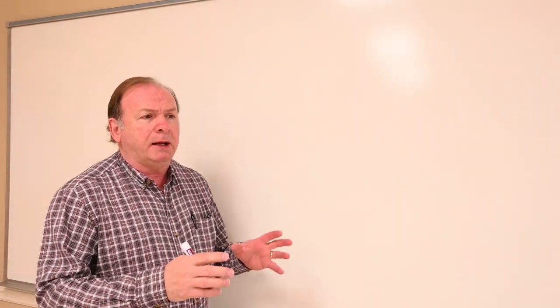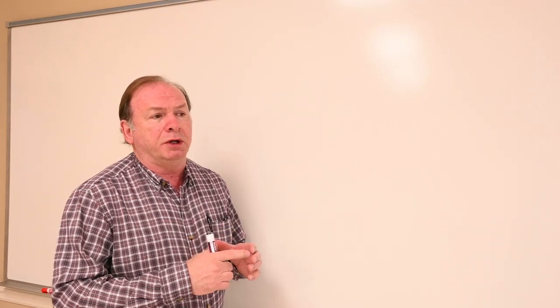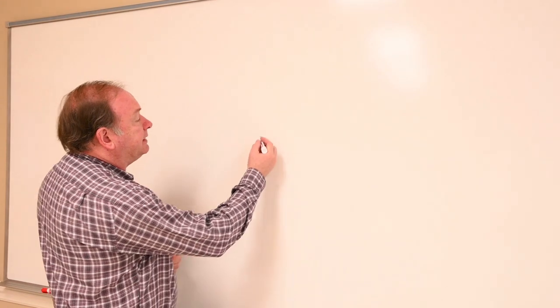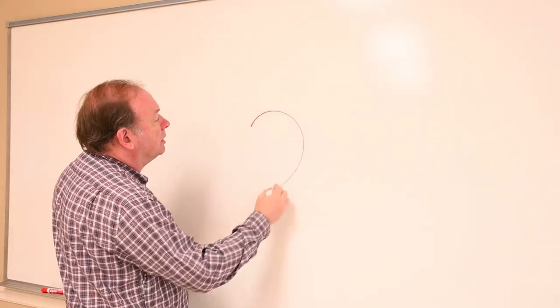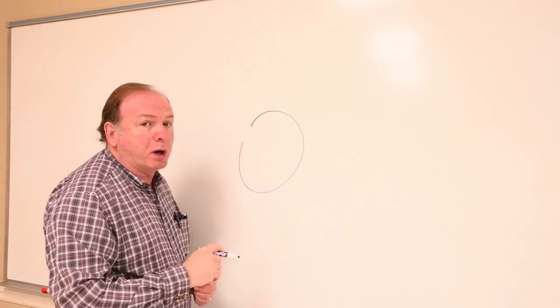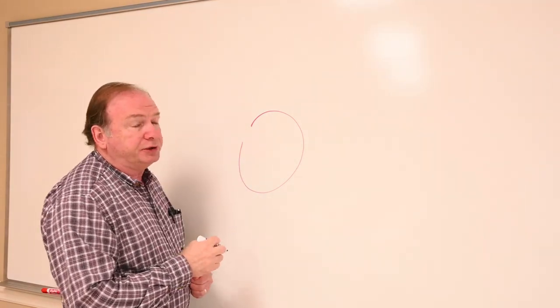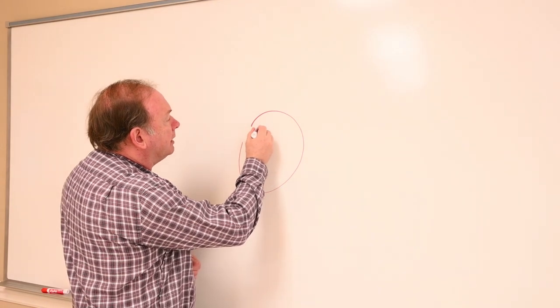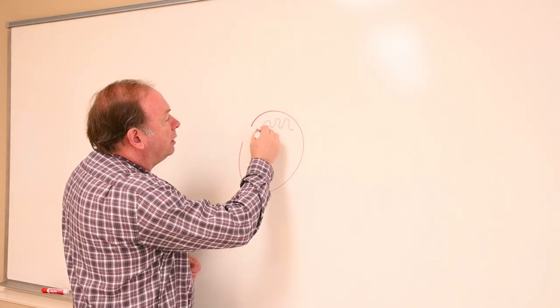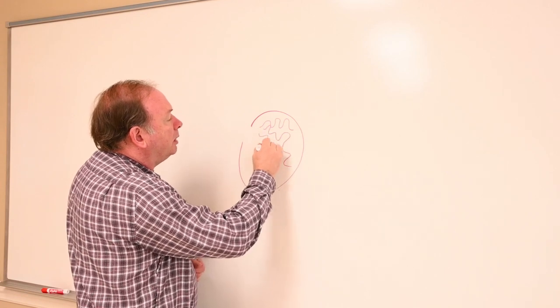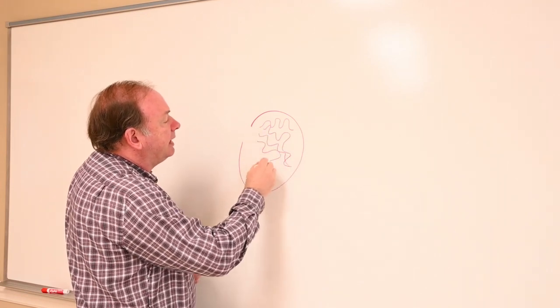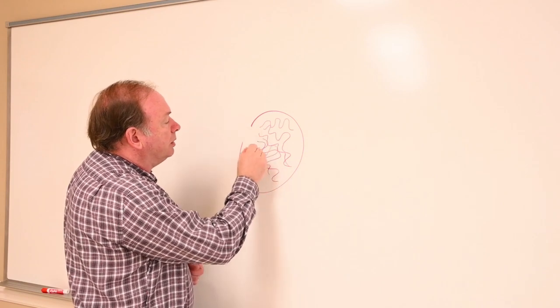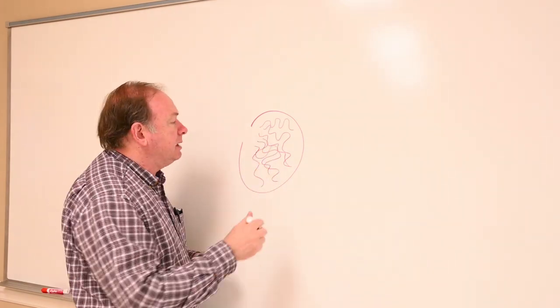We're going to begin our talk on the male reproductive system by looking at the origin of sperm, where sperm develops in the testis. Inside the testis, which is pretty much an oval structure, there's a network of fine tubules we call seminiferous tubules. They extend out through most of the testis as twisted and coiled tubules, kind of like spaghetti going out through there.